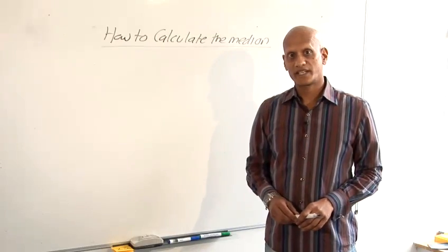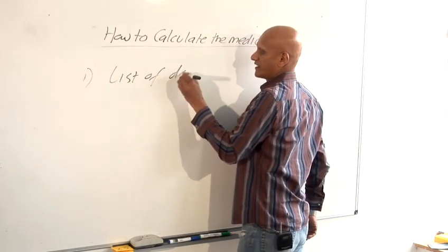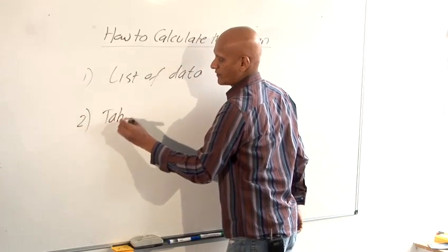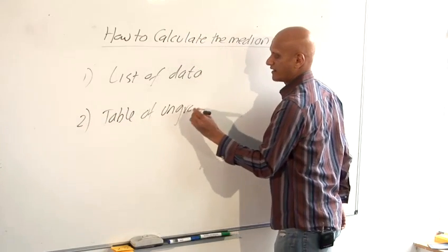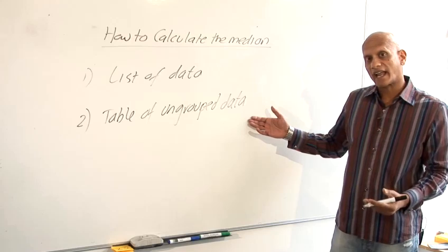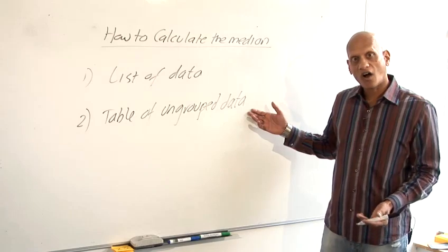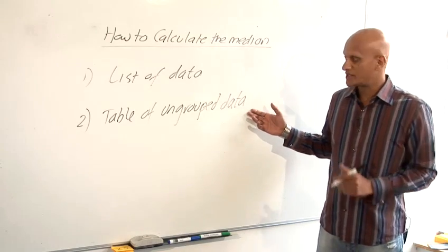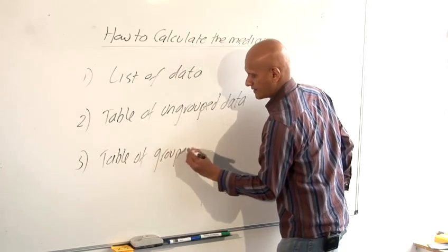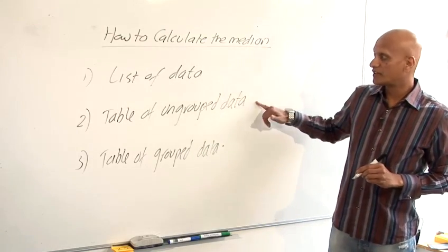Now there are three different cases in which we'd need to calculate the median. The first case is if we have a list of data. The second case is if we have a table of ungrouped data. So that would probably be discrete data, something like the number of times you went to the cinema or number of seats in a car, things which can't be 3.12 or something like that. And then three, a table of grouped data. And the method we'd use would be different for each of these.